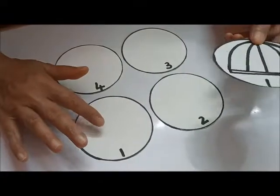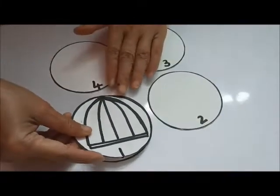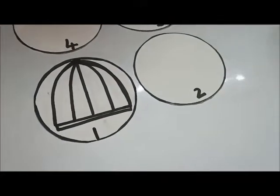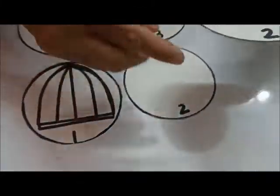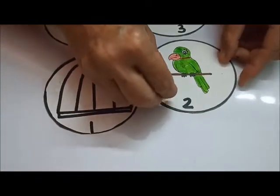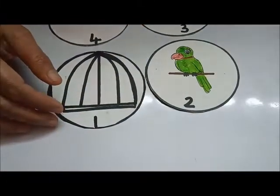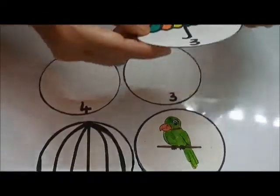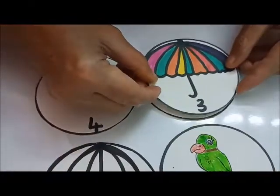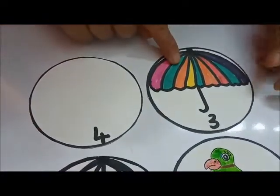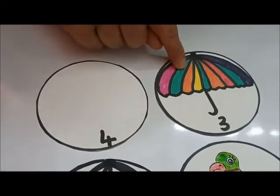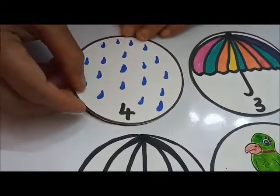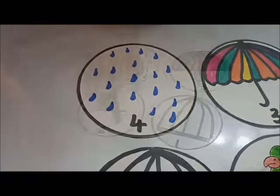In circle number one, you will draw a cage like this. In circle number two, you will draw a parakeet like this. Paper parakeet. In circle number three, you will draw a very colourful umbrella like this. In circle number four, you will draw some raindrops.